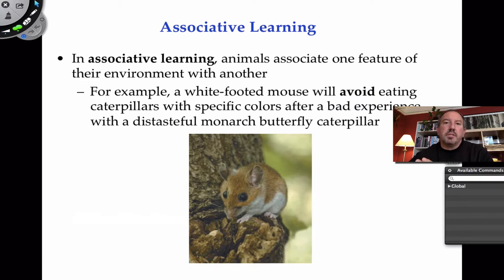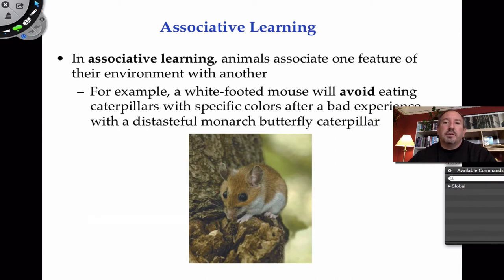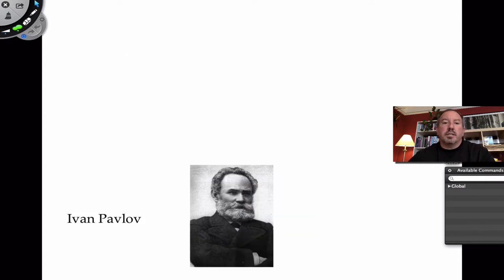There's one kind of learning called associative learning — this is what it sounds like, you're associating one thing with another. Here's a little white-footed mouse and it's learning to avoid caterpillars that have an interesting striped pattern, because it's learned through association. When it eats that caterpillar, it's very distasteful — it happens to be the caterpillar of the monarch butterfly that's eating a lot of milkweed, so it takes on an unpalatable, bitter taste. The mouse avoids eating it because it's learned to associate that pattern with the distasteful experience.